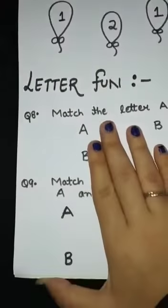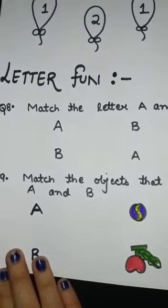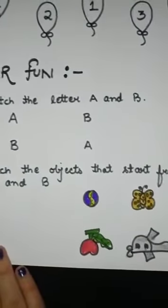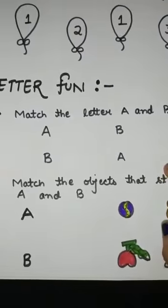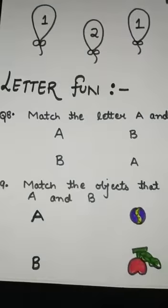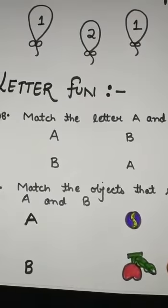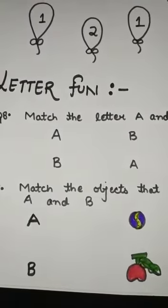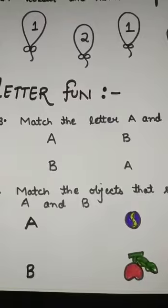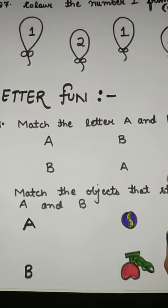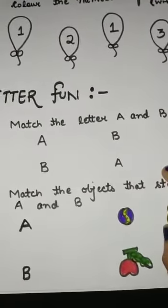Now the letter section starts. Question eight is: match the letter A and letter B. Here are the two letters A and B. You have to match the two letters with crayons, not with pencil — match letter A with letter A and letter B with letter B.